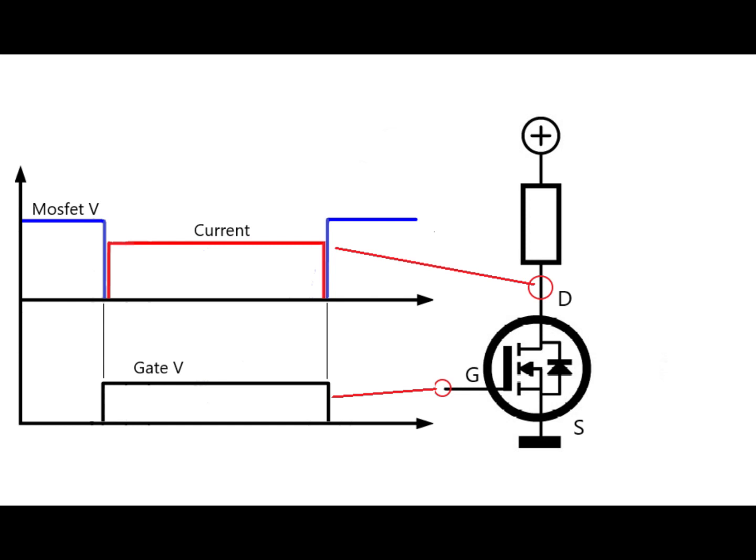Now this is only the ideal case. In reality, the switch takes a finite time to turn on and off, so the diagram would look more like this where both the voltage and current take time to ramp up and down. During the time when there are both current and voltage in the switch is when it dissipates a relatively large amount of power.